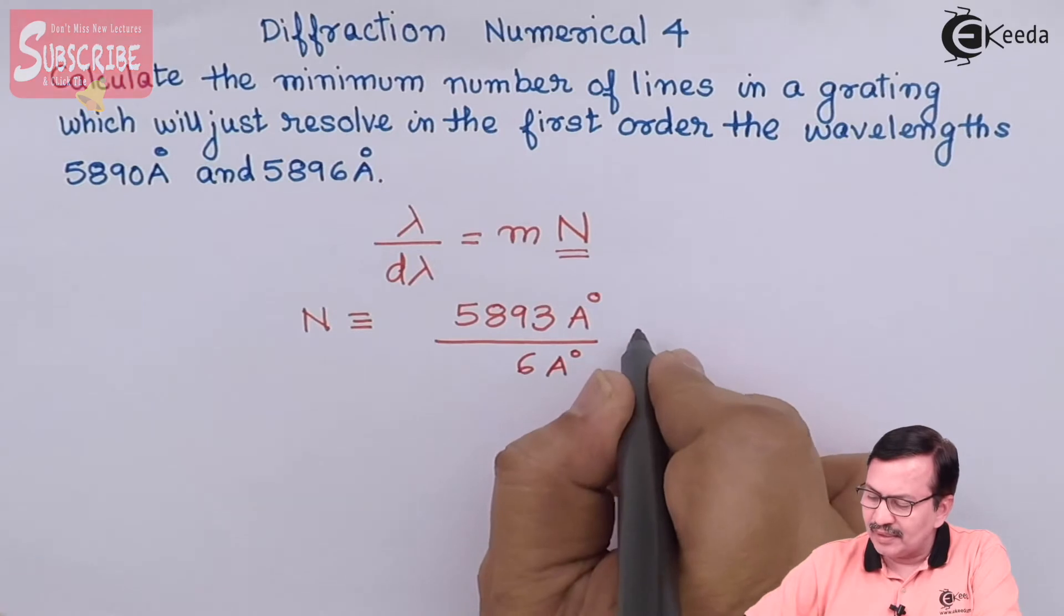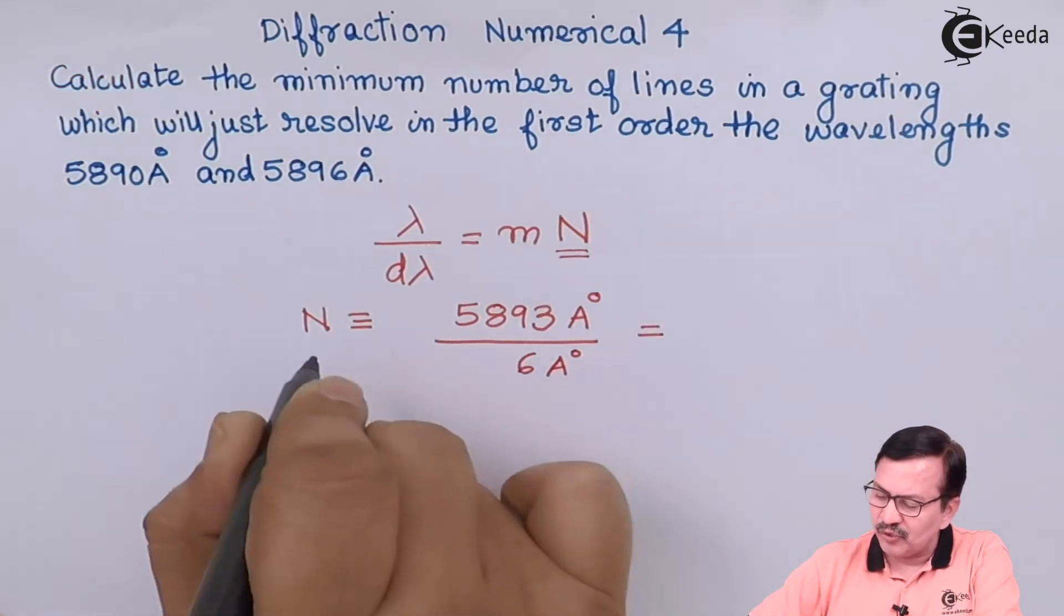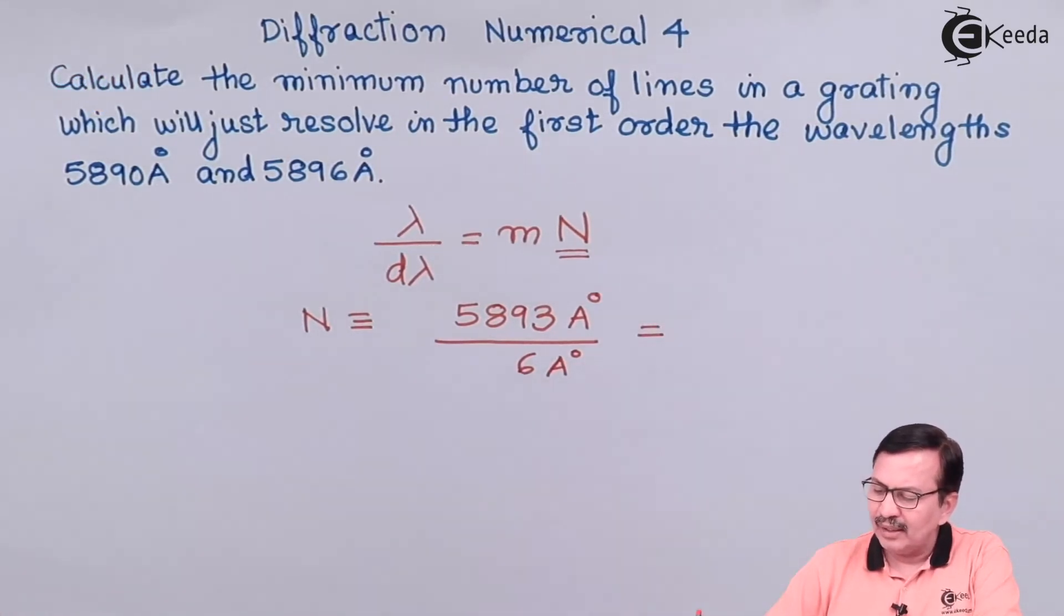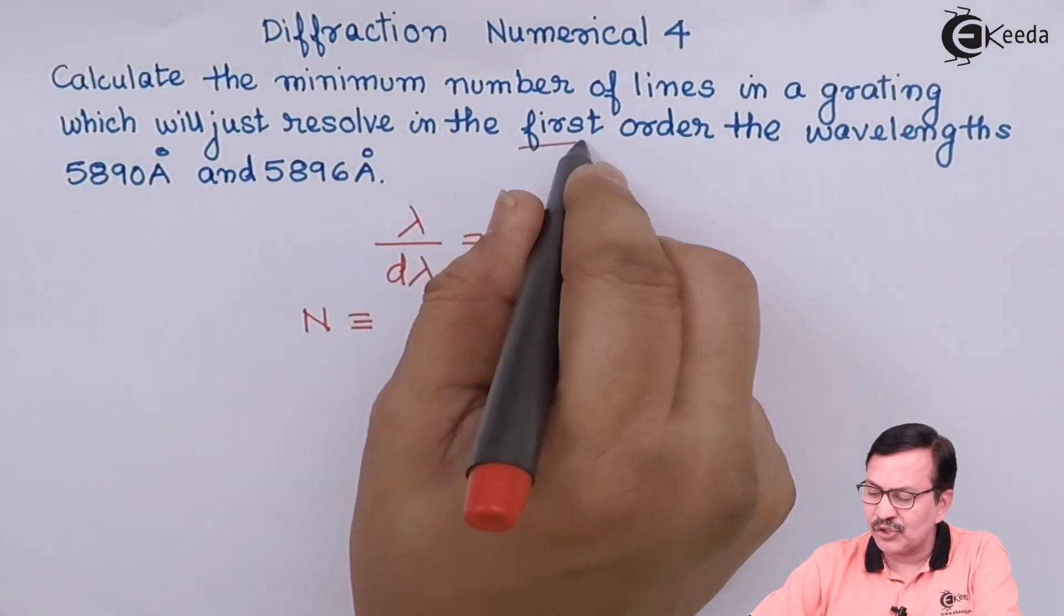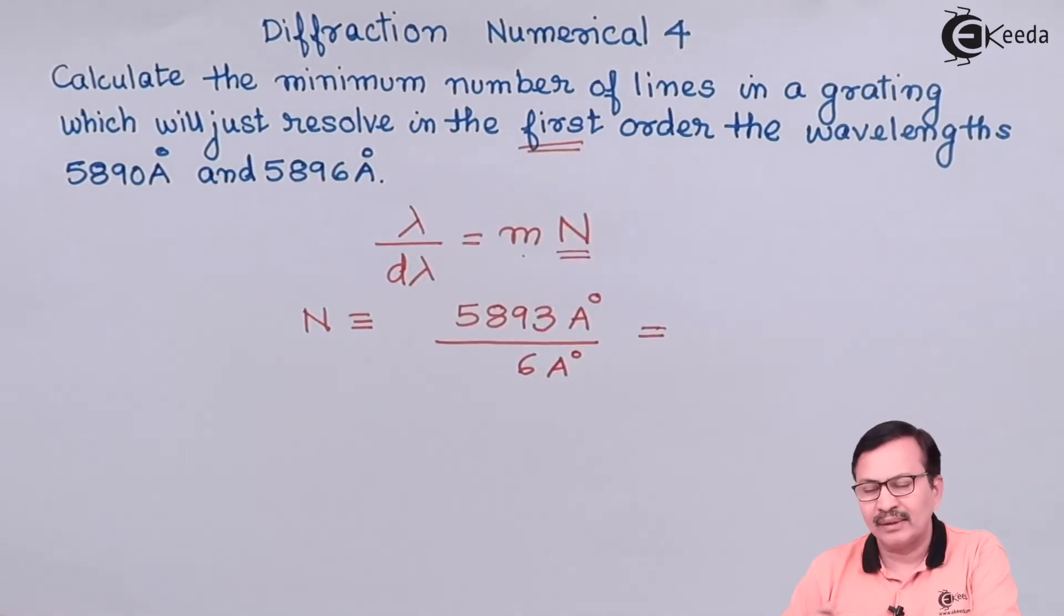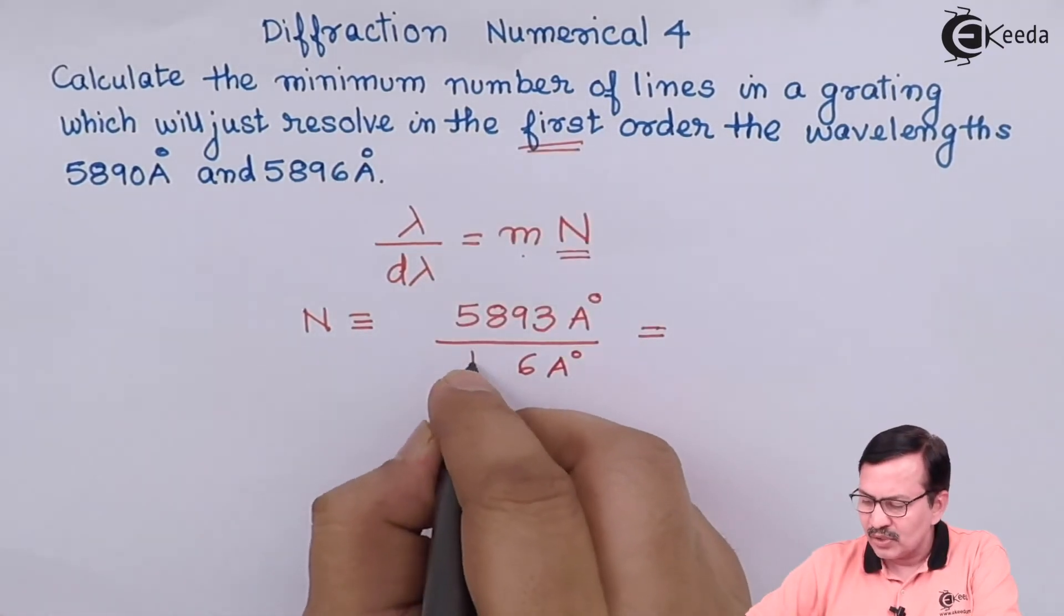When you divide this, your value of N turns out to be... but prior to that, we didn't write anything for m. M is actually in the first order, so m equals 1. Let us make it more complete and put it as 1 times 6 angstroms, and find out the value.